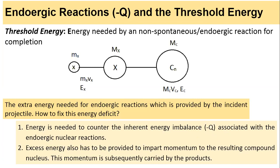The second point is that excess energy also has to be provided to impart momentum to the resulting compound nucleus. This momentum is subsequently carried by the products — the product particle and the product nucleus — as discussed in detail in the previous videos.